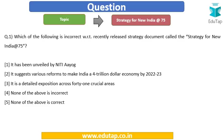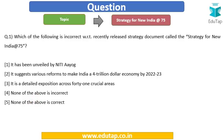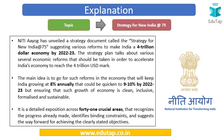Let's start with the first question: Which of the following is incorrect with regard to the recently released strategy document called the Strategy for New India @75? Options are: it has been unveiled by NITI Aayog; it suggests various reforms to make India a four trillion dollar economy by 2022–23; it is a detailed exposition across 41 crucial areas; or none of the above is incorrect.